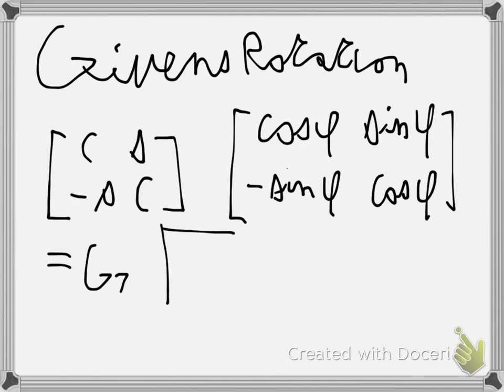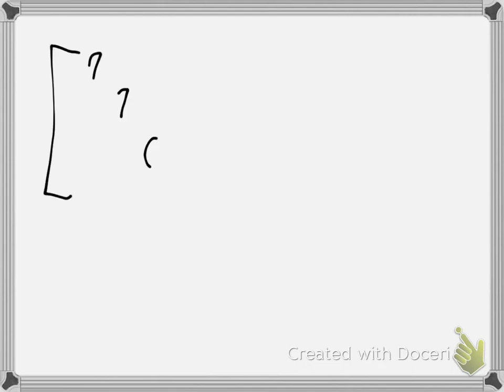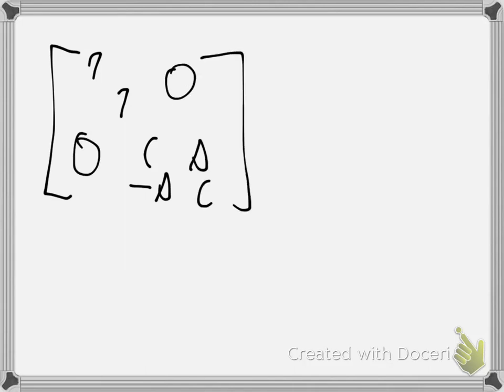When you are in more dimensions there will be 1s on the diagonals and 0s everywhere else.